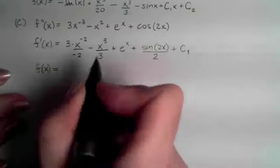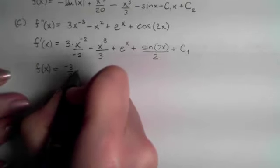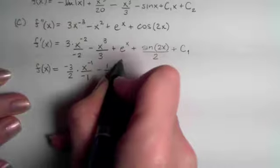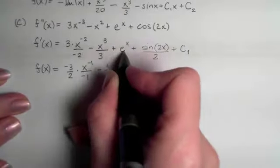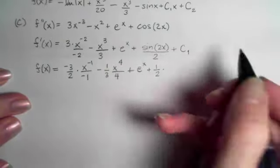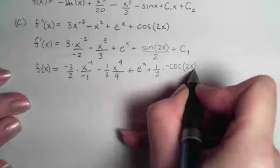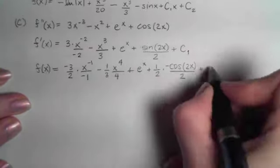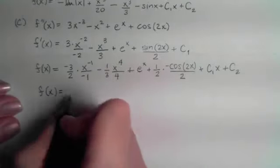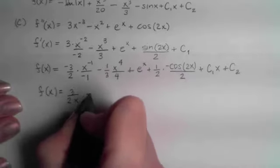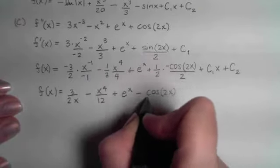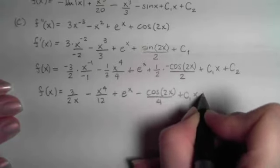Taking the antiderivative again to get f: move through the constant, hit the power rule backwards — add 1, divide by the new power — for each polynomial term. The antiderivative of e to the x is again e to the x. What did I take the derivative of that gave me sine? That's a negative cosine of the inside unchanged, divided by the derivative of the inside. Then plus c sub 1 times x plus c sub 2. Simplified, we get positive 3 halves over x minus x to the 4th over 12 plus e to the x minus cosine of 2x over 4, plus c sub 1 x, plus c sub 2. And we're done.